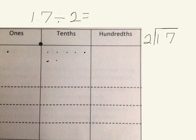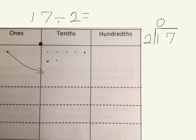The first thing we need to do is take our 1 one and divide it into 2 equal parts. We cannot do that. 2 goes into 1 zero times. We have to take our 1 and unbundle it so that we can instead have 10 tenths.